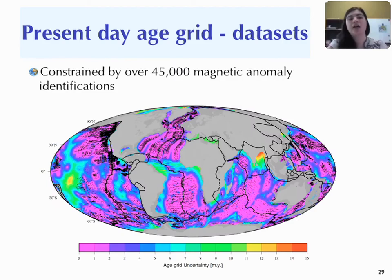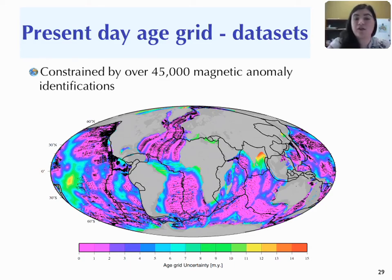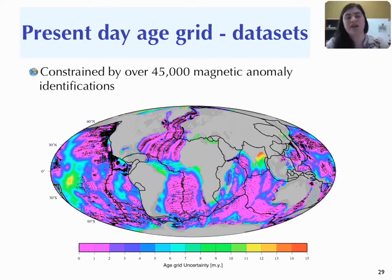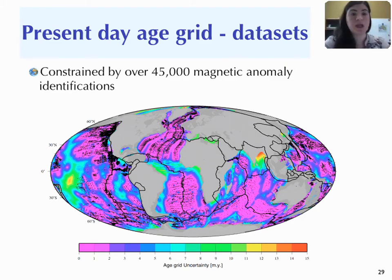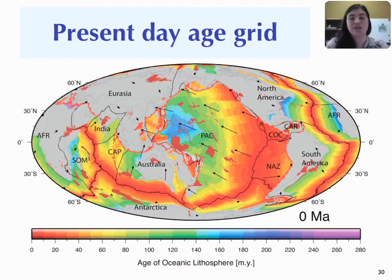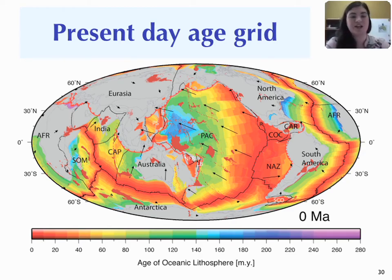This map shows the magnetic anomaly pick database that goes into the present day age grid — constrained by over 45,000 magnetic anomaly identifications. All the black points are the magnetic anomaly identifications used for the present day age grid, forming quite an extensive data set. Many groups have gone and very carefully identified these magnetic anomalies on the ocean floor, and this all goes towards creating the present day age grid.